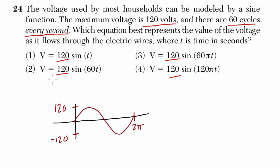But we want to understand which of these actually gives us 60 cycles every second. So to do that, let's just look at two examples. Let's look at choice 2, and we'll look at this value, and then choice 4, we'll look at this value, 120π.